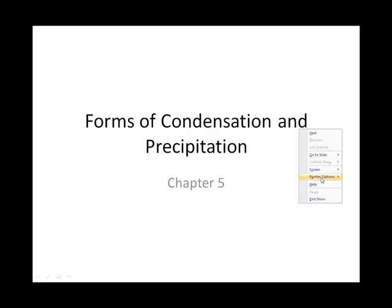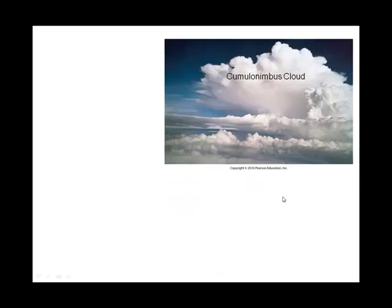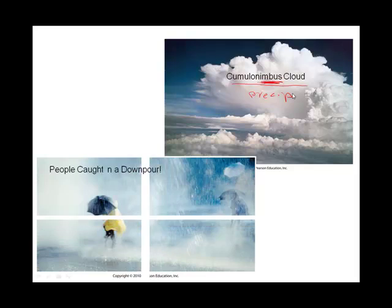Chapter five takes a closer look at clouds and precipitation. There are ten different cloud types we're going to focus on. One of them is cumulonimbus clouds, and you're going to learn the names of those ten types. Anytime you see the word NIMB, think precipitation. The other type of cloud that precipitates is called a nimbostratus cloud.